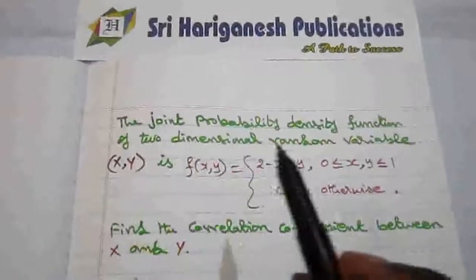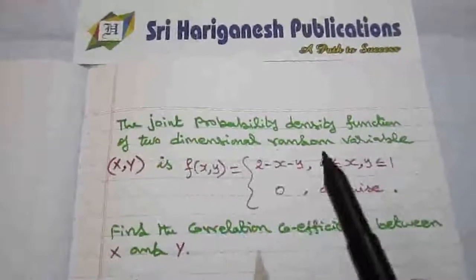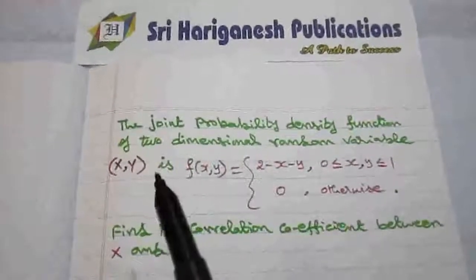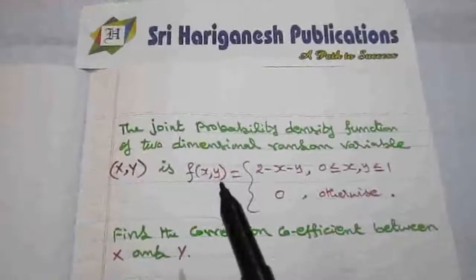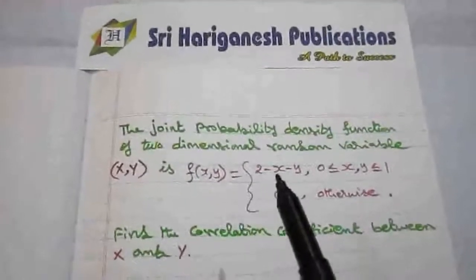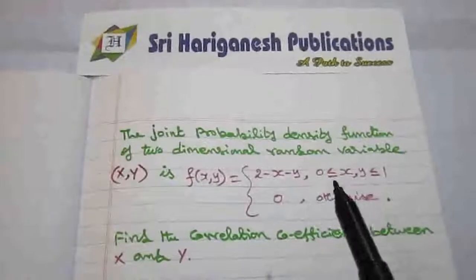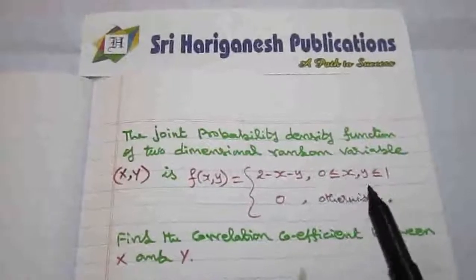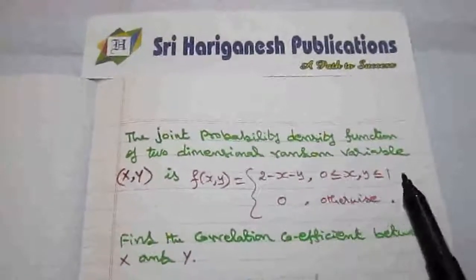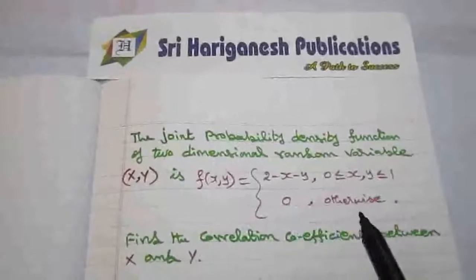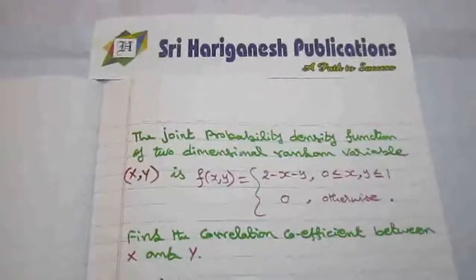The joint probability density function of two random variables x and y is f(x, y) = 2 minus x minus y, in the interval 0 ≤ x, y ≤ 1, and 0 otherwise. Find the correlation coefficient between x and y.